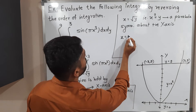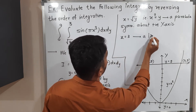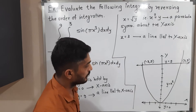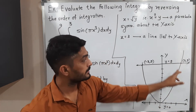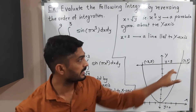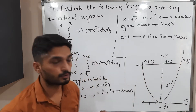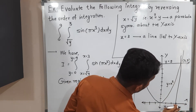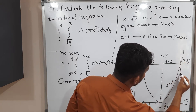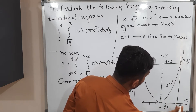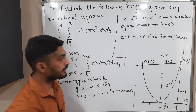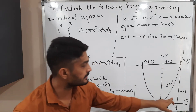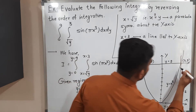The next curve is x = 3, which is a line parallel to the y-axis passing through x = 3. I draw that line — it also passes through the point (3, 9) since that point has x-coordinate 3. So our region of integration is bounded by y = 0, y = 9, the parabola x² = y, and the line x = 3. This shaded area is our region of integration.